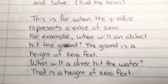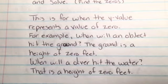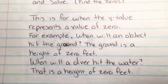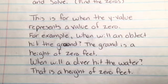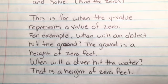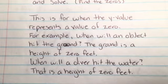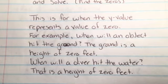All right, so this is for when the y value represents a value of zero. For example, when would an object hit the ground? The ground has a height of zero feet, so we'd set it equal to zero.